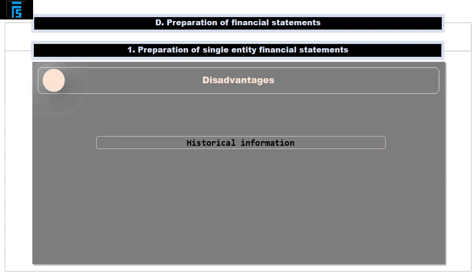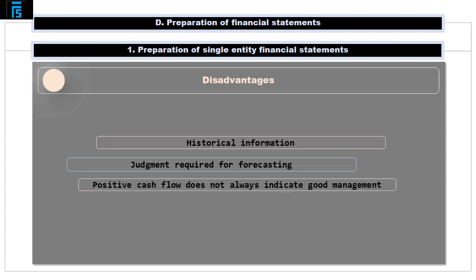On the other hand, the drawback of the statement of cash flows is that, as is the case with pretty much anything coming from the financial statements, the information which it contains is historic, and its use for forecasting or projection purposes requires judgment and appropriate adjustments. Moreover, short-term cash generation in some periods may have to be sacrificed if the company is to grow, so a positive cash flow balance may not always be a sign of good management.